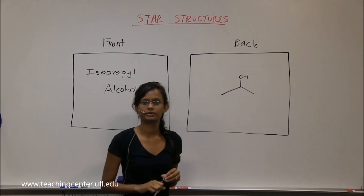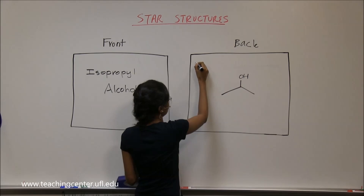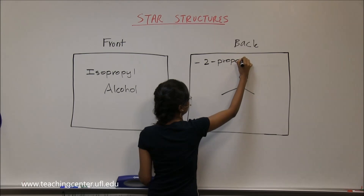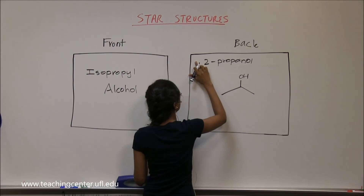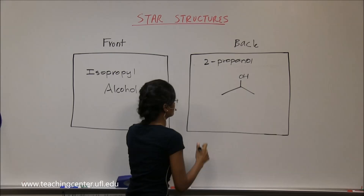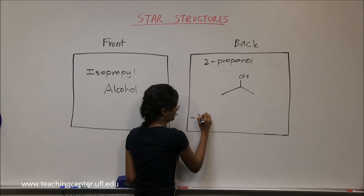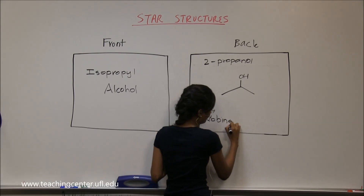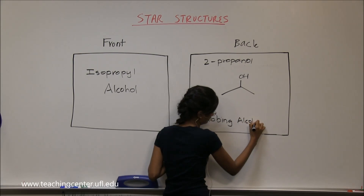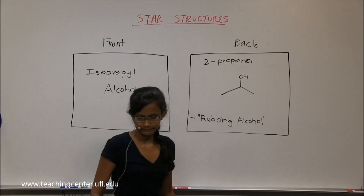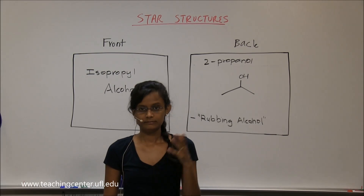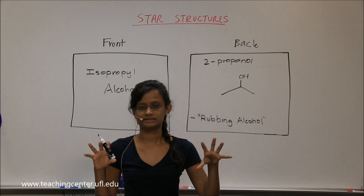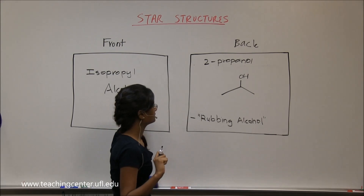So the OH group has to be on carbon number two, and the IUPAC name would be 2-propanol. This is also called rubbing alcohol. Keep in mind: 'iso' means dividing in half with both sides the same, and since it's an alcohol, you have the alcohol group on the second carbon.